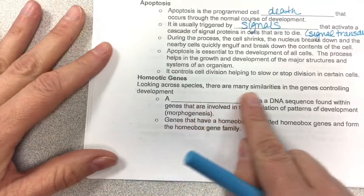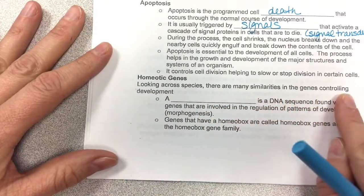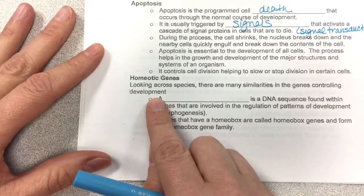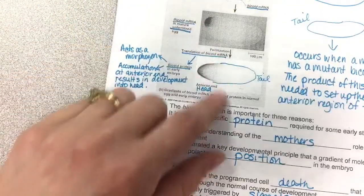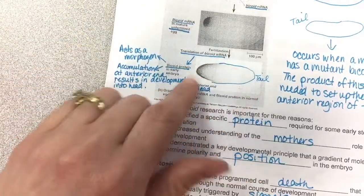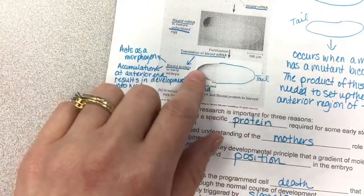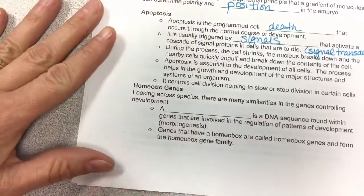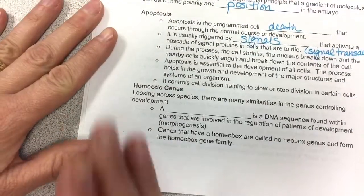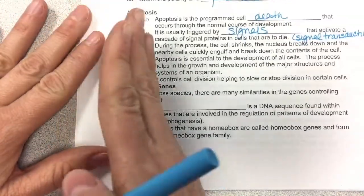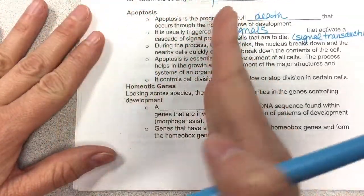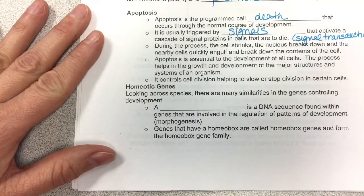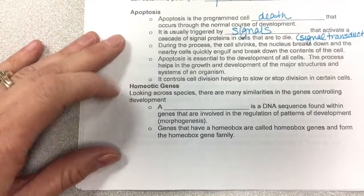Looking across species, there are many similarities in the genes controlling development. The bicoid protein gene is helpful in development of the fruit fly, and if you look from the fruit fly to the mouse to humans, there are some similarities in those genes.